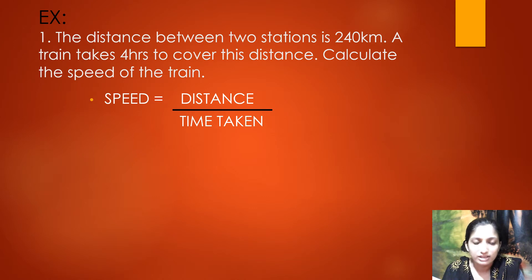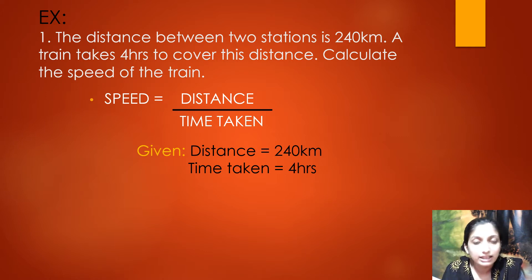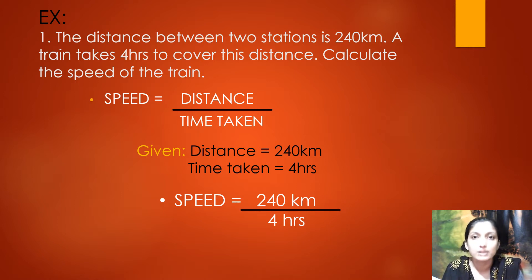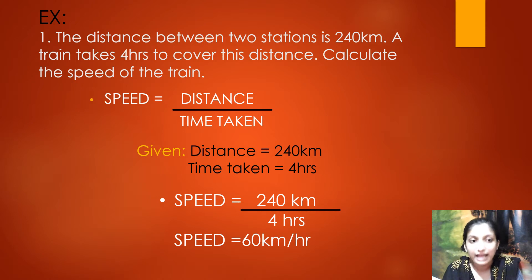In this question, the given values are: distance = 240 kilometers and time taken = 4 hours. So speed equals 240 kilometers divided by 4 hours, which equals 60 kilometers per hour. The speed of the train is 60 km/h, by which it covers 240 kilometers in four hours.